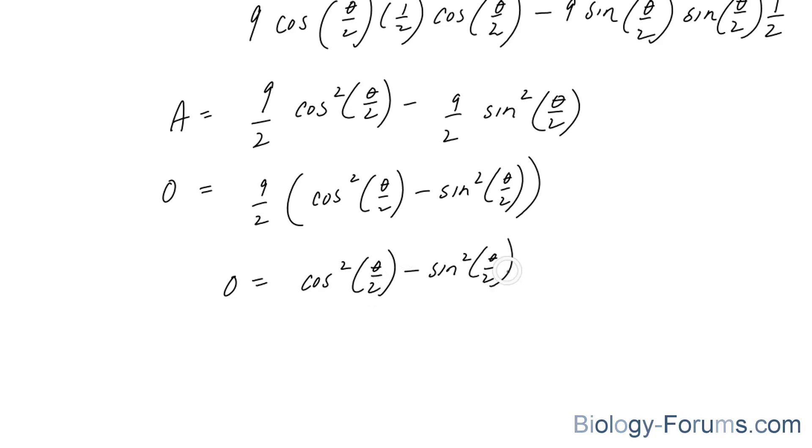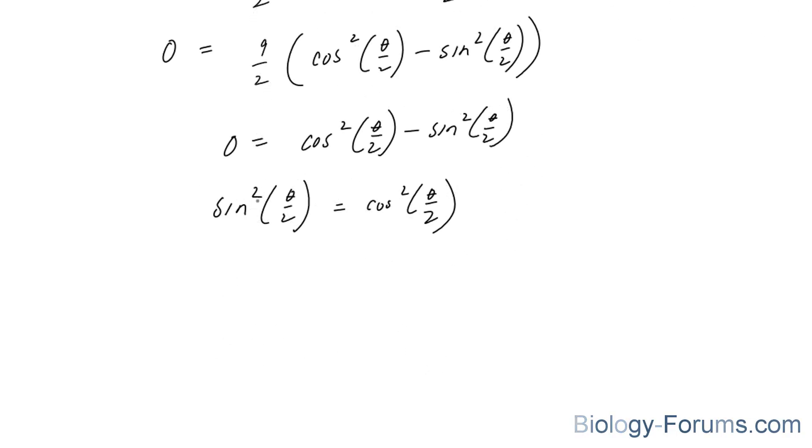We end up with zero equals cosine squared theta over two minus sine squared theta over two. I'm going to bring this term over. We end up with sine squared theta over two equals cosine squared theta over two.